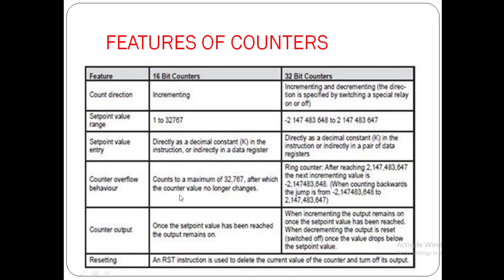Counter overflow behavior: a 16-bit counter counts to a maximum value of 32,767, after which the counter value no longer changes. In a 32-bit counter, after reaching its highest value it starts decrementing — this is called a ring counter. After reaching its maximum value, the next incrementing value starts from minus 2,147,483,648 when counting backward.